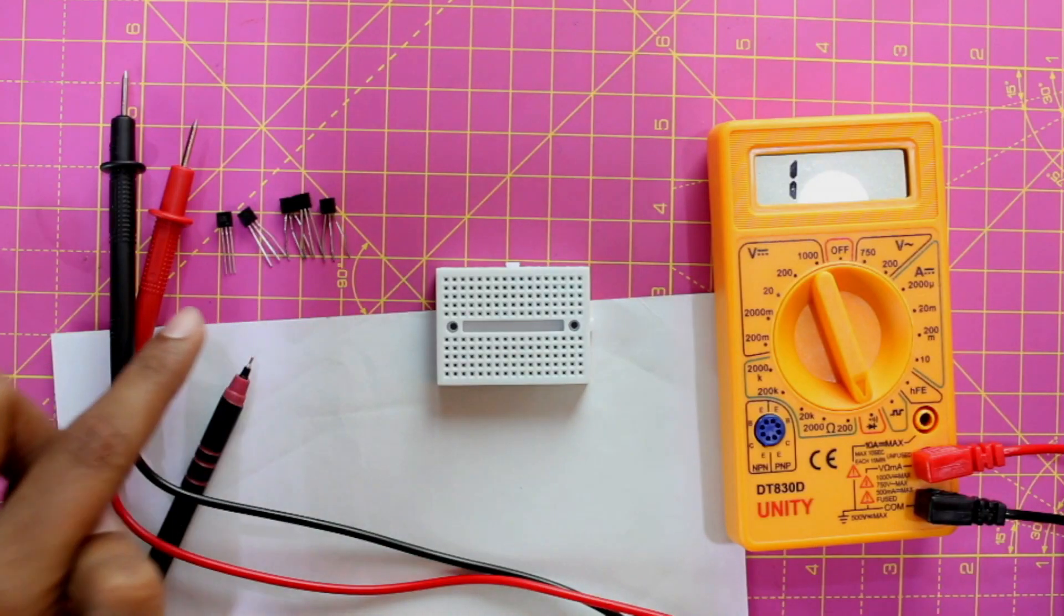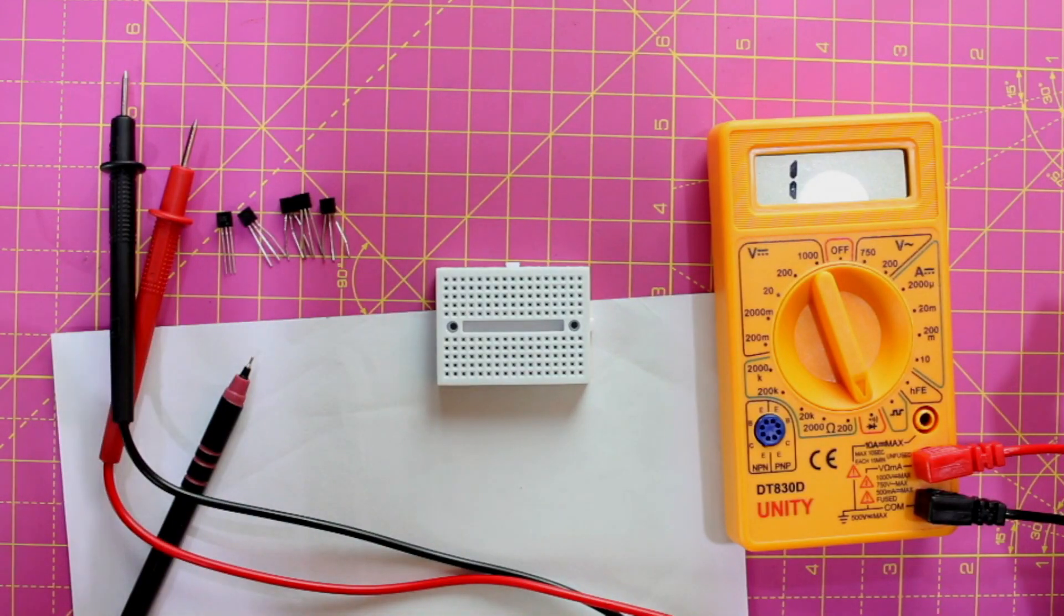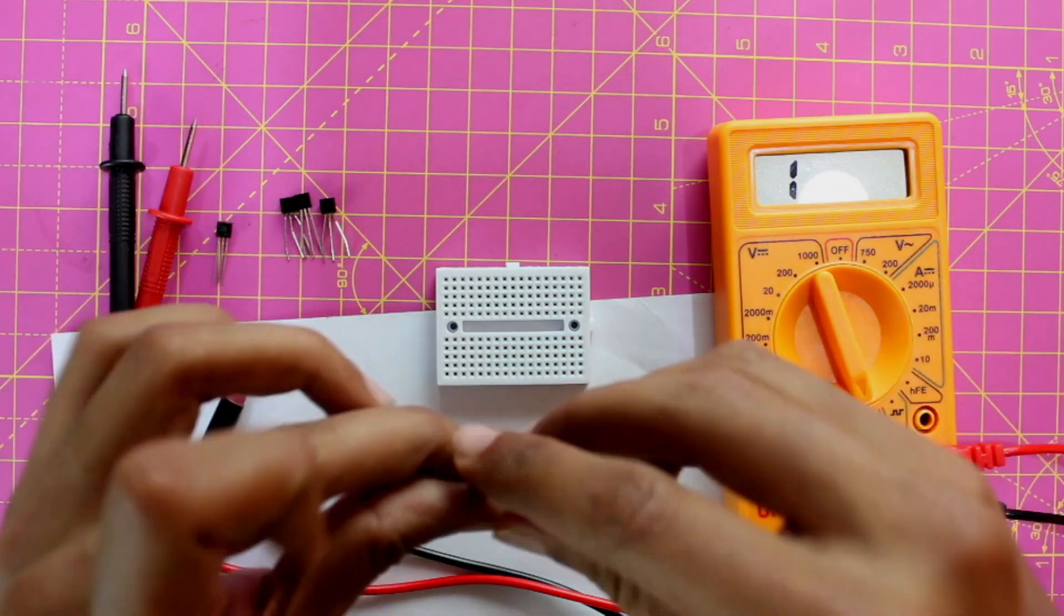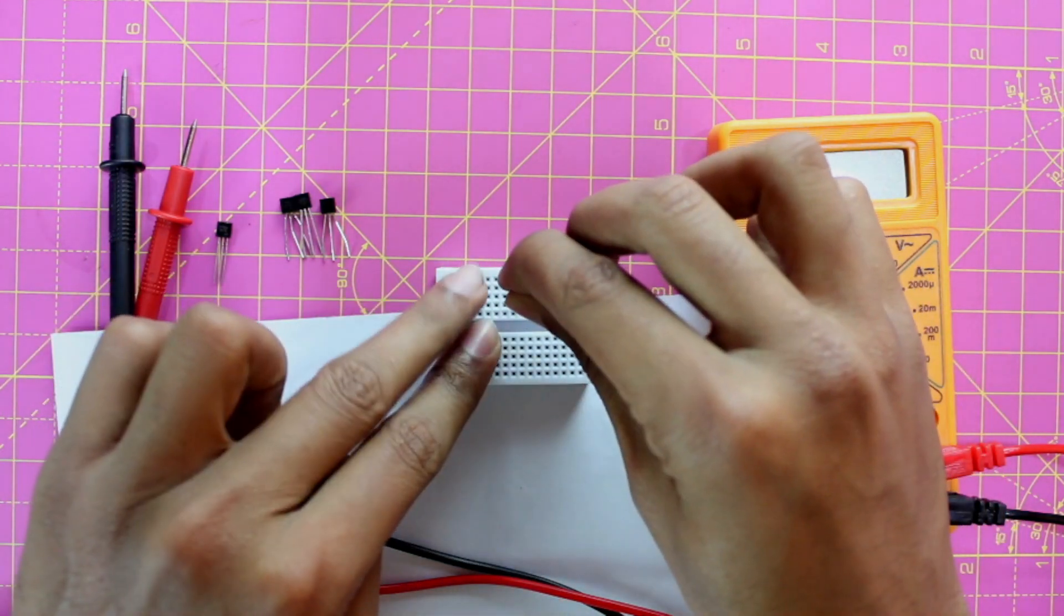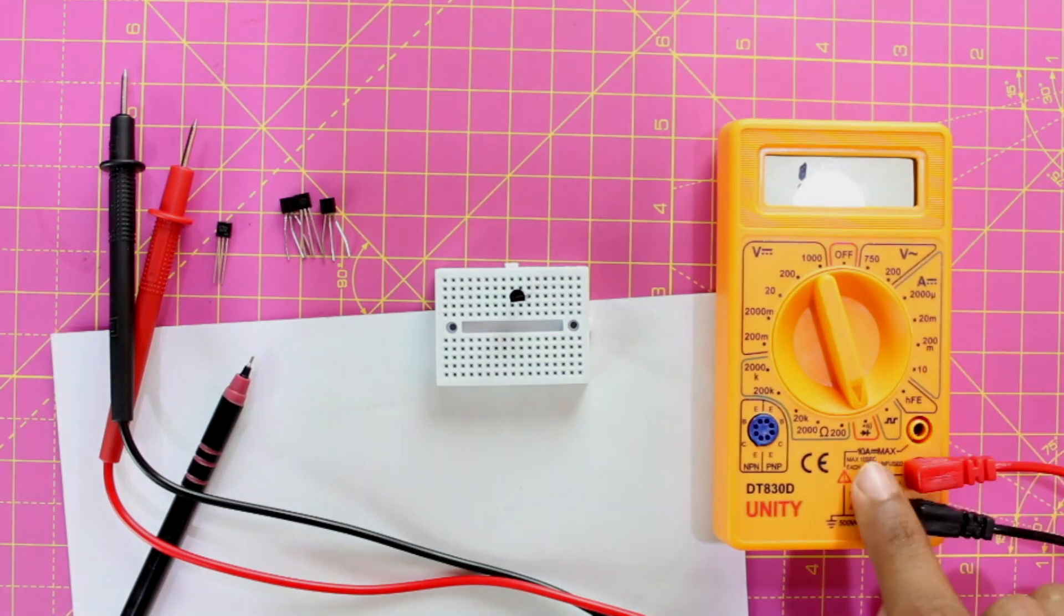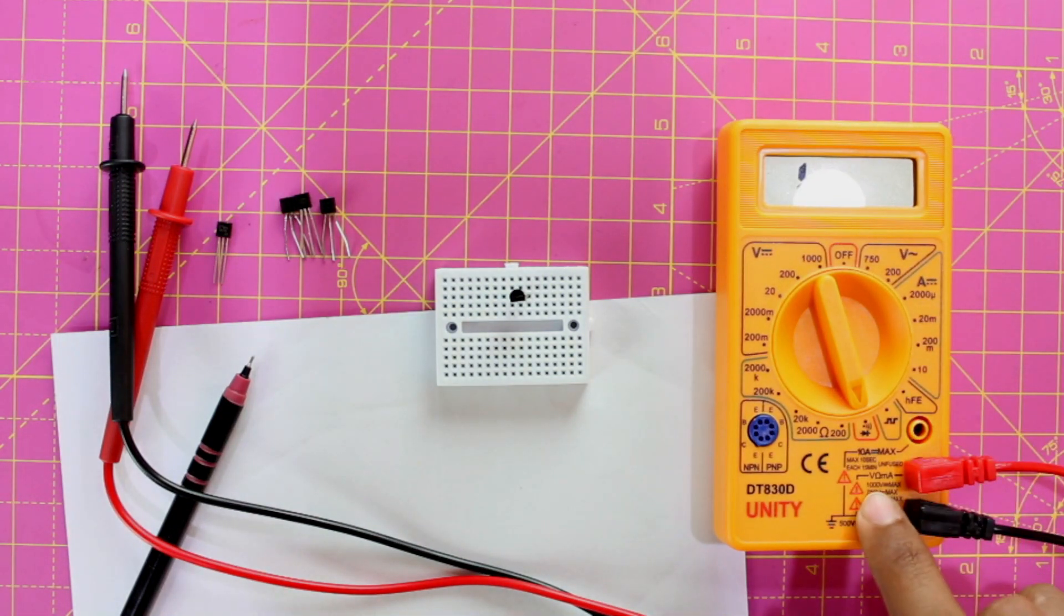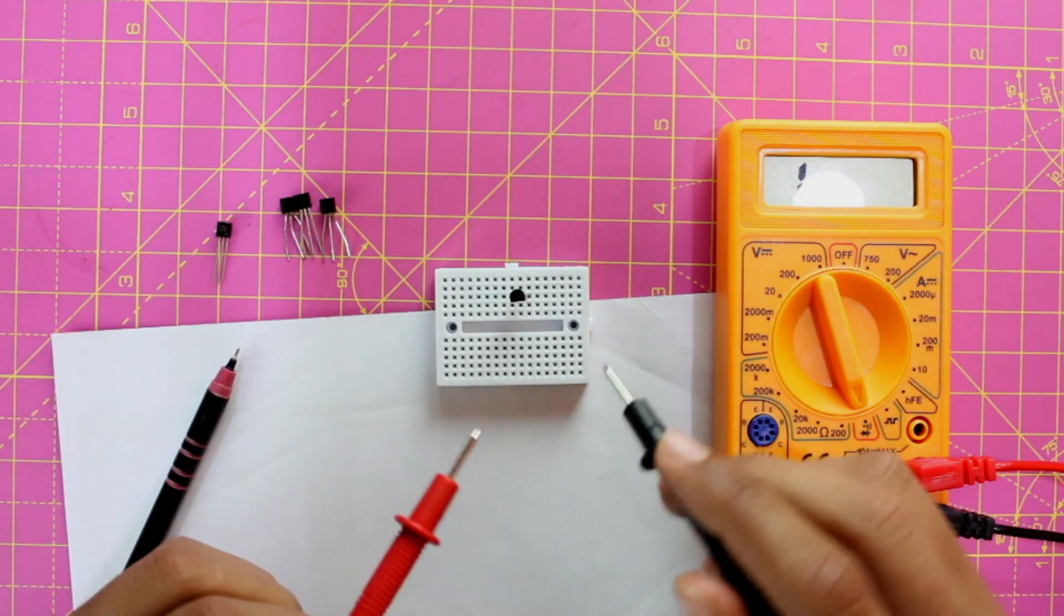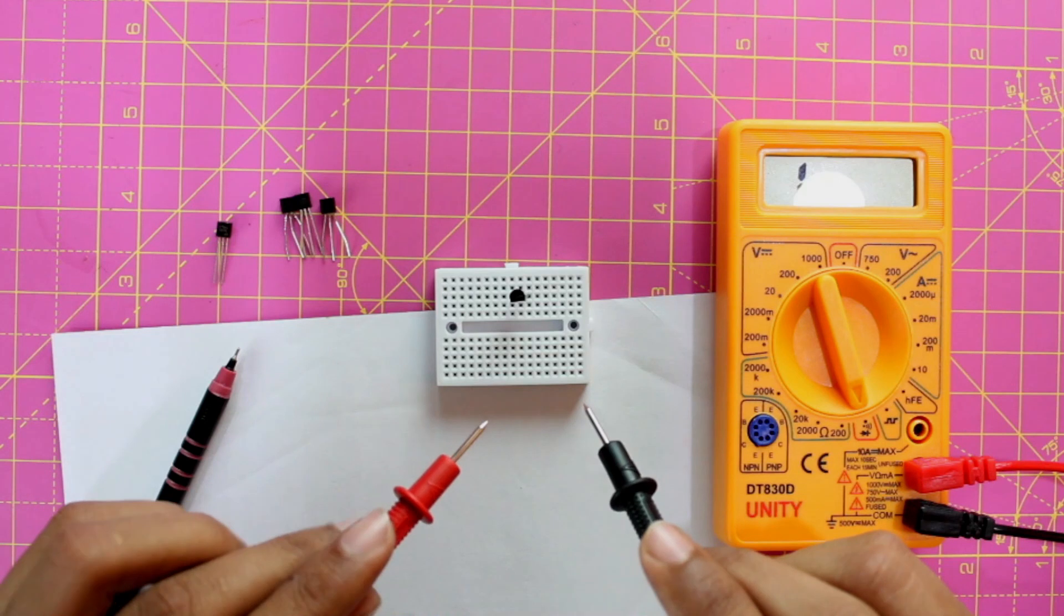Now I have some transistors over here and let's assume that I don't know if these are NPN transistors or PNP transistors. So let me randomly pick one and put it on a breadboard. We'll be putting the multimeter on the diode mode here and make sure your black probe is here and your red probe is connected to voltage mode. Then we can start probing the transistor pins to check if it is an NPN or PNP transistor.